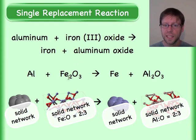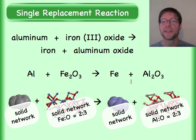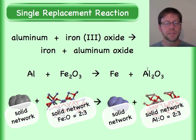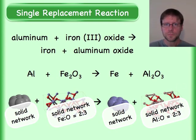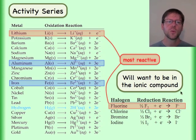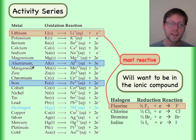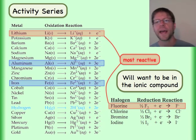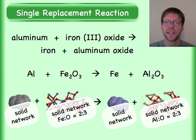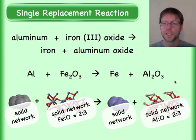The iron that pops out here is initially in the ionic compound and then gets replaced by the aluminum. This releases so much energy that the iron will actually melt — you have molten iron. Aluminum is higher up on the activity series than iron, so aluminum ends up as the thing in the compound, and there it is.